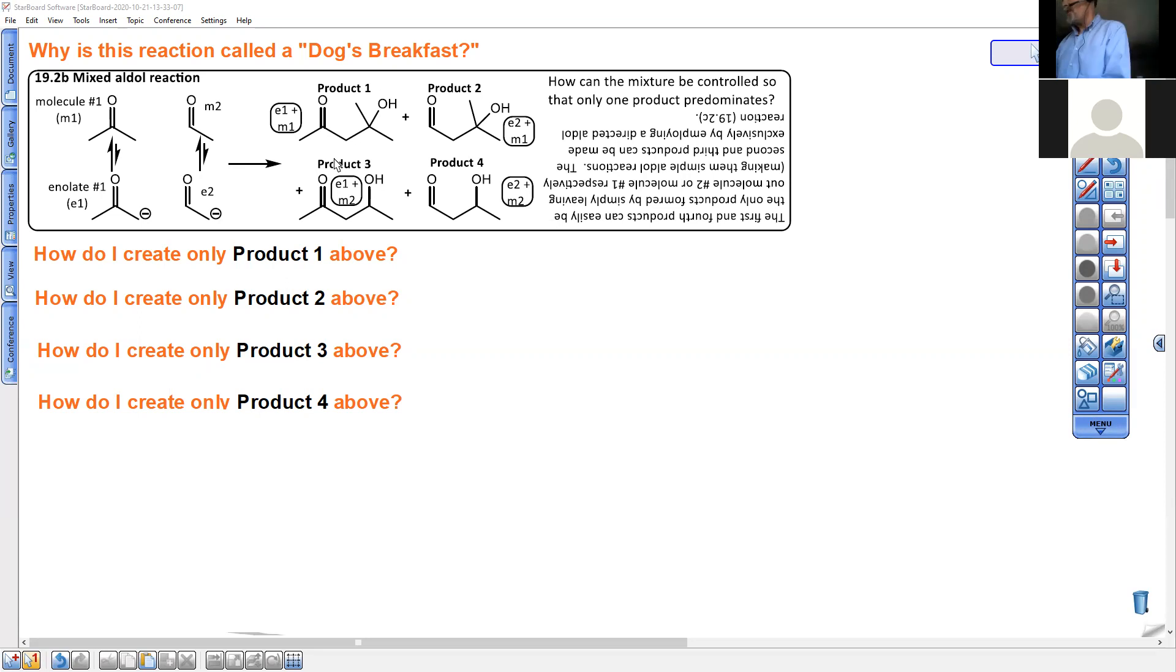Remember, aldol reaction products always have an alcohol on the beta position. Here's alpha. Here's beta. Every molecule here has that combination. Beta alcohols.